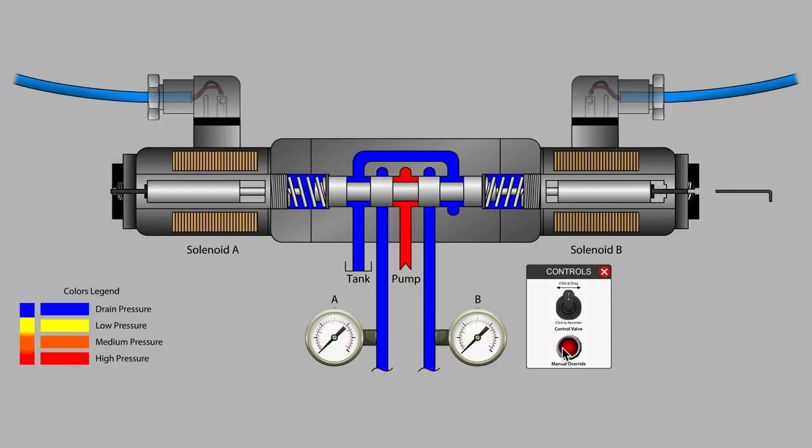Pushing on the mechanical override is a simple way to find out if the internal parts of the valve, namely the valve spool, is still free to move and operating normally.